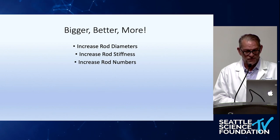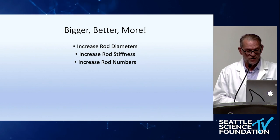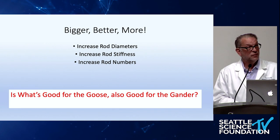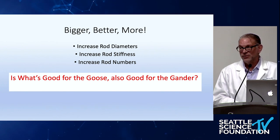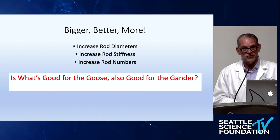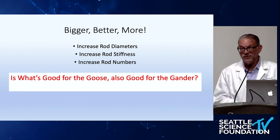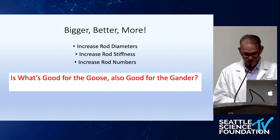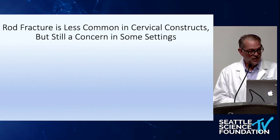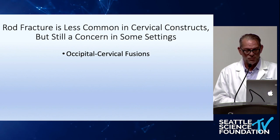That's really the reflex many of us have been following in thoracolumbar spine. So the question becomes, is what's good for the goose good for the gander? I will acknowledge that in cervical spine reconstructions, the rate of non-unions when we do it posteriorly or anterior-posteriorly is much lower than in the thoracic and thoracolumbar spines. But it is still a concern in certain settings, and I'll identify the ones I think are most susceptible.